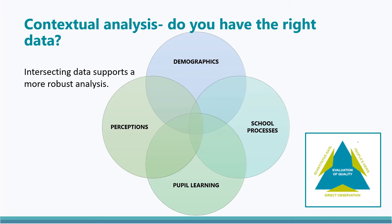A contextual analysis requires robust data to ensure the planning decisions that stem from it are targeted correctly. It's helpful to think about data under the following headings. Demographics: the descriptive information about the school and its community, such as levels of poverty and vulnerability, free school meals uptake, care experience, additional support needs, attendance and exclusion.